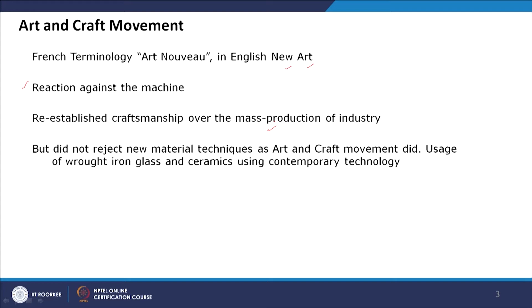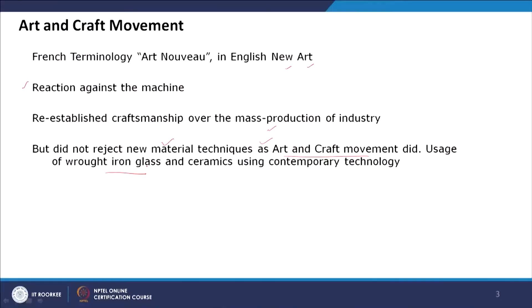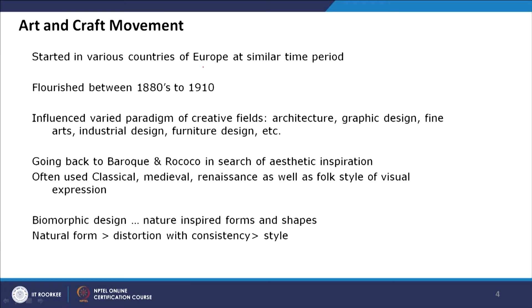Art Nouveau rejected the style of new technology but, unlike the Arts and Crafts movement, it did use new materials — specifically wrought iron, glass, and ceramic — blending traditional aesthetics with these new materials. It started in Europe, similar to the Arts and Crafts movement, and flourished between the 1880s and 1910, influencing architecture, graphic design, fine arts, industrial design, and furniture design. It took inspiration from Baroque and Rococo as well as classical and medieval styles, being more figurative than the machine movement's abstraction.